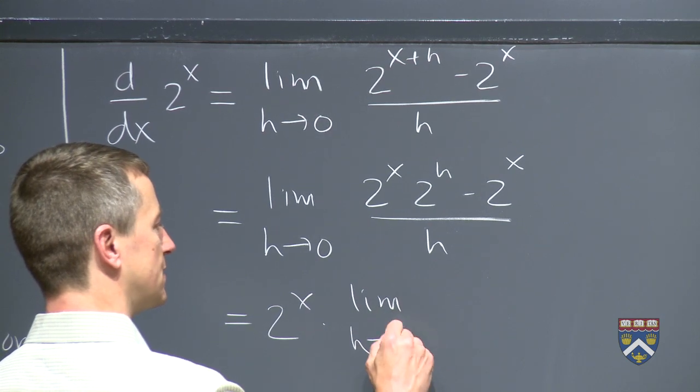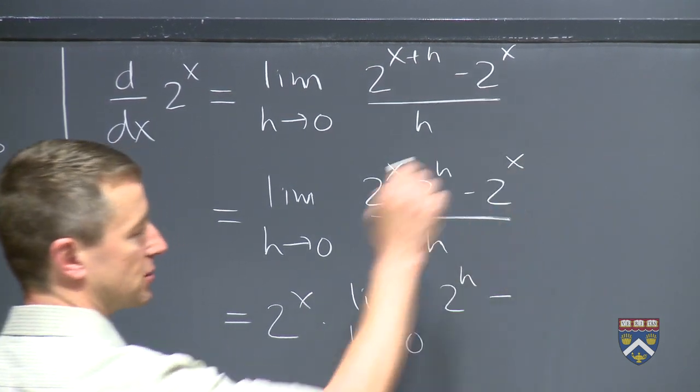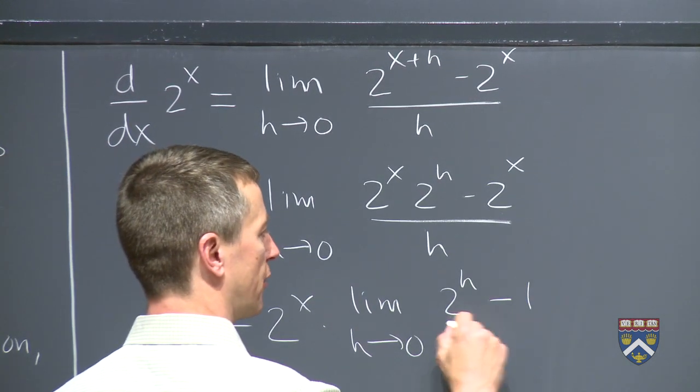And what's left is this limit as h goes to 0, 2 to the h. When we factor the 2 to the x out of this, we're left with a 1 over h.